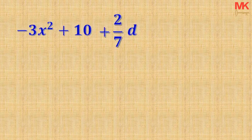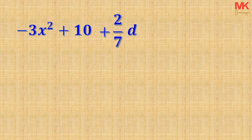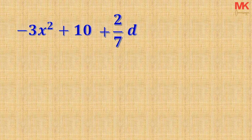Supposing we have the expression negative 3x squared plus 10 plus 2 over 7 D. How do we find the coefficients of the letters x and D? We are going to neglect the positive 10 because it is a constant term — in other words, it is not attached to any letter. First of all, whenever we write a number with a positive operation, the number can be written without the operation and its value remains the same.